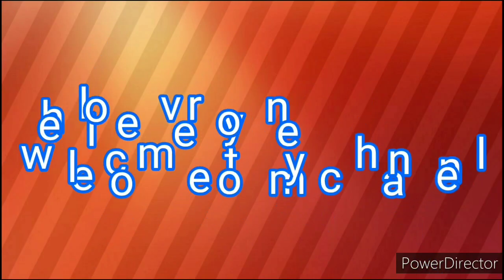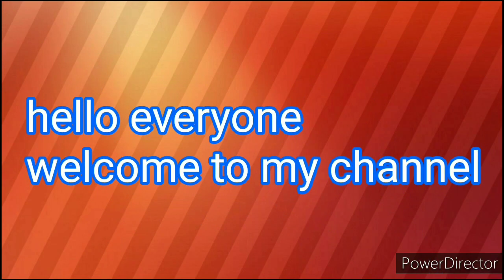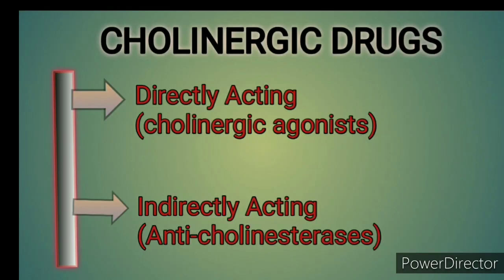Hello everyone, welcome to my channel. Today in this video we will discuss simple classification of cholinergic drugs. These are mainly divided into two groups: first is directly acting, which have direct interaction between the drug and the receptors — mainly nicotinic and muscarinic — and the second is indirectly acting, which inhibit cholinesterase, the enzyme responsible for degradation of acetylcholine. Anti-cholinesterase drugs increase the level of acetylcholine.